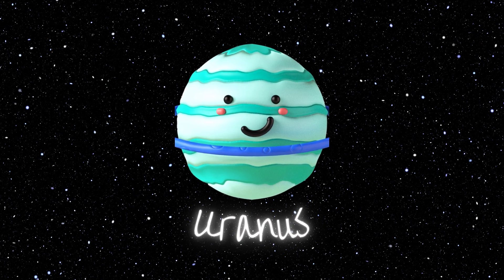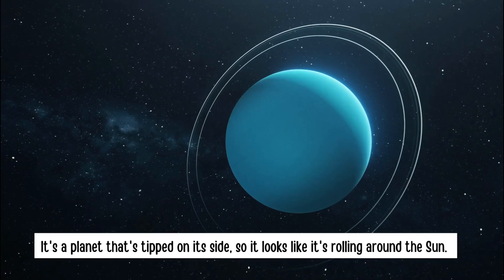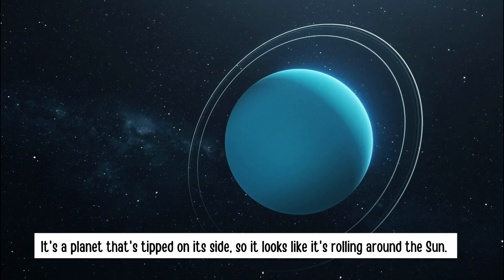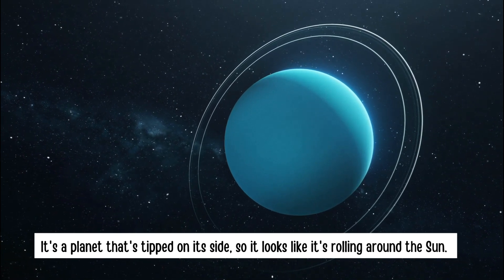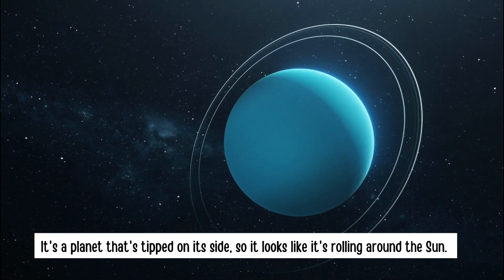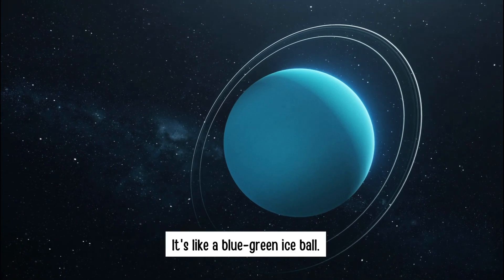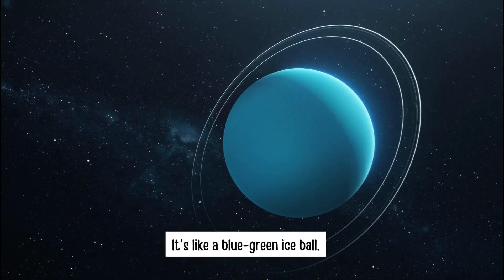Uranus. It's a planet that's tipped on its side, so it looks like it's rolling around the sun. It's like a blue-green ice ball.